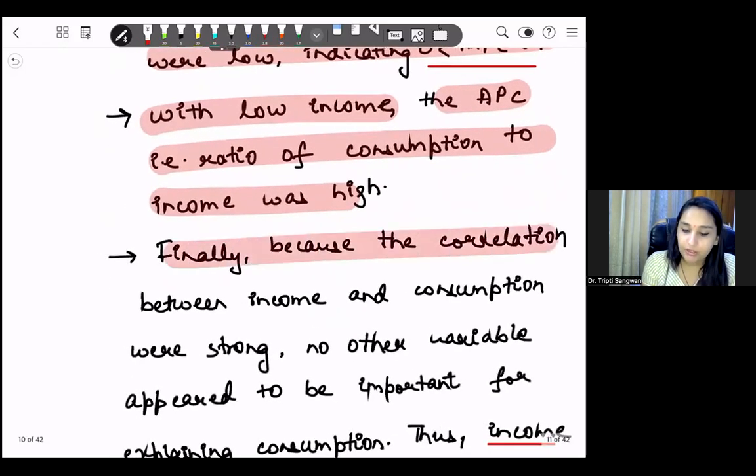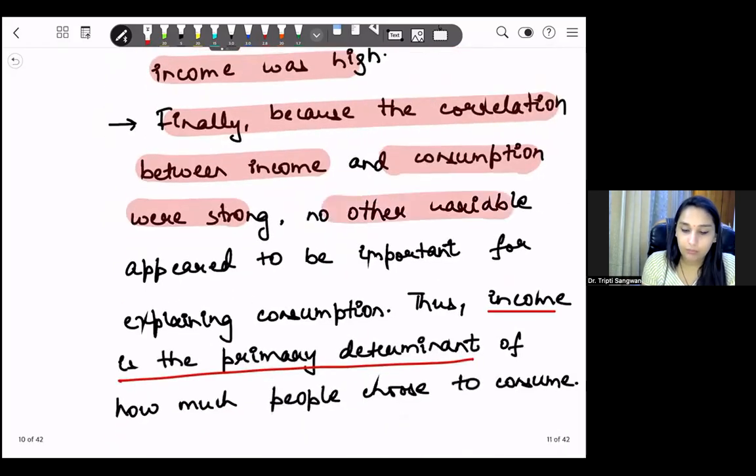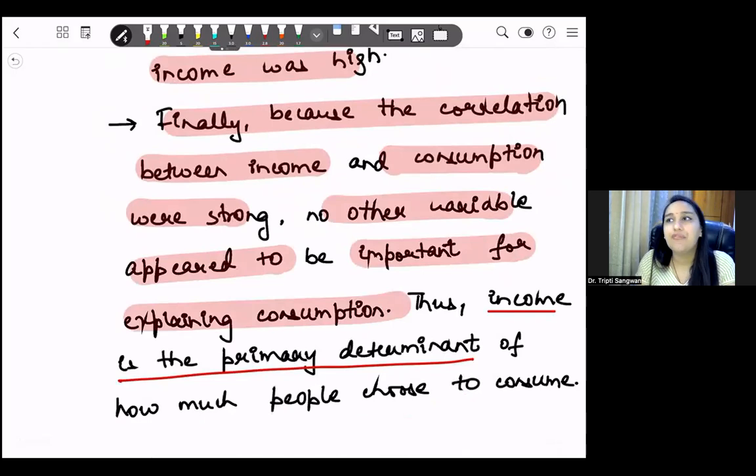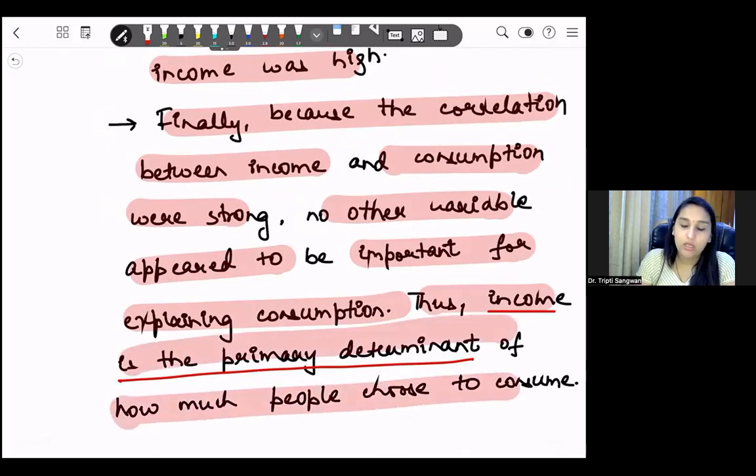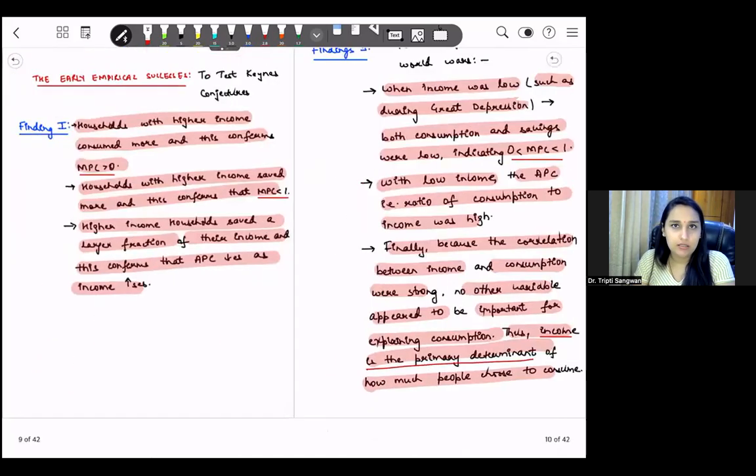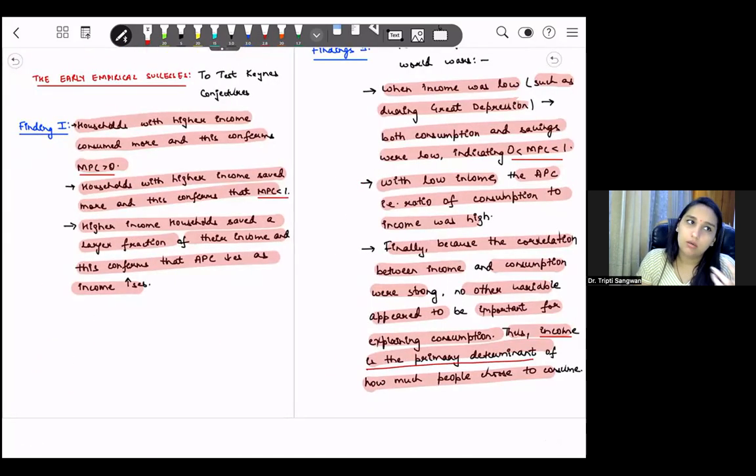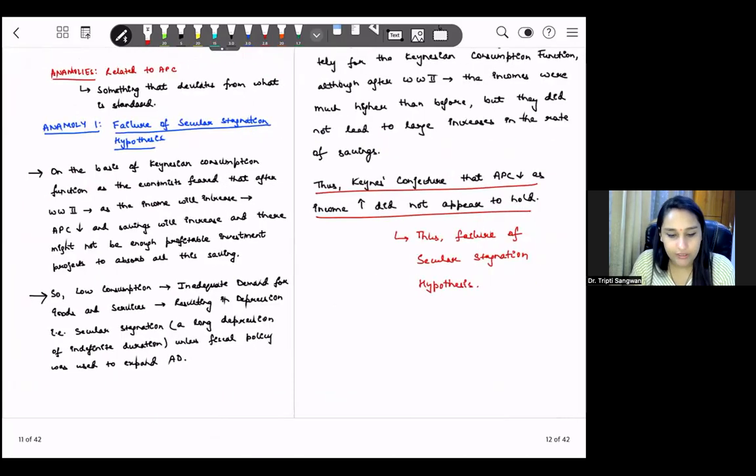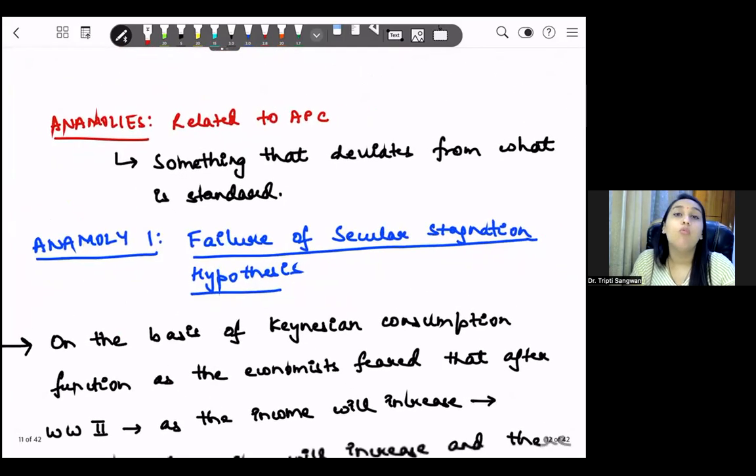And finally, because the correlation between income and consumption was strong, no other variable appeared to be important for explaining the consumption. Now, of course, we have interest rates and various other factors. But at that point in time, income was the sole important factor, which led to significant changes in the consumption pattern. Thus, income is the primary determinant of how much people choose to consume. So according to these two findings, these two findings were towards accepting yes, the conjectures are right, even during the period of crisis, world war, great depression, as suggested by finding two, and even during normal periods, as we saw in finding one. So we discussed two findings which support Keynes's consumption function.